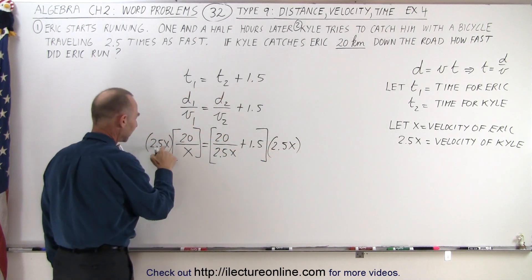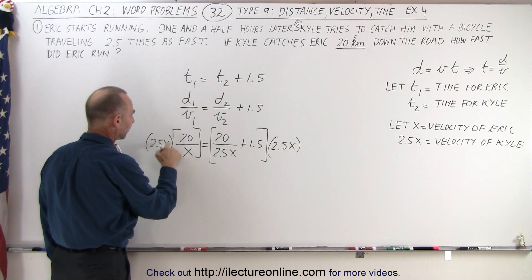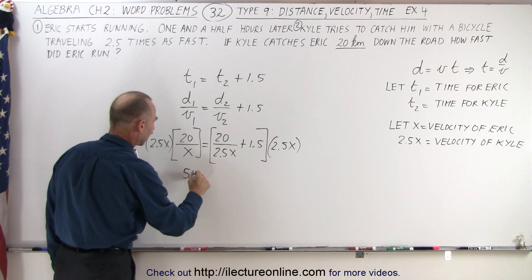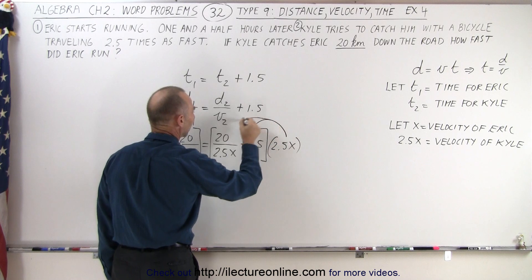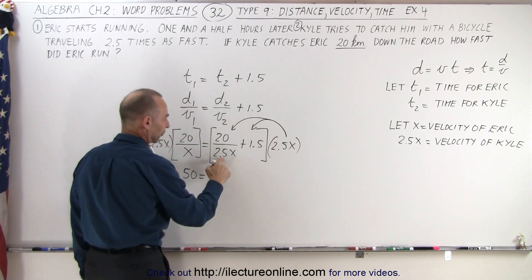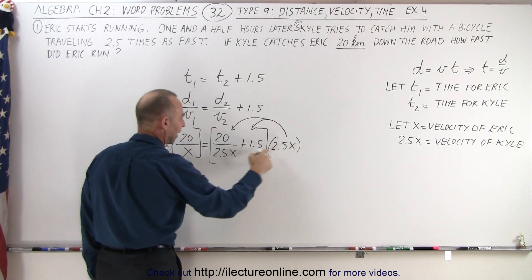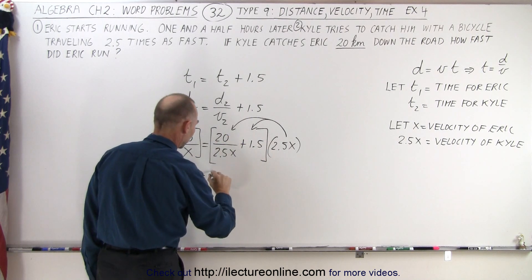On the left side the x is cancelled out, and so we have 2.5 times 20, which is 50. On the right side we have to distribute the 2.5 to both of the terms. For the first term, notice that the 2.5x cancels out and we're left with 20.